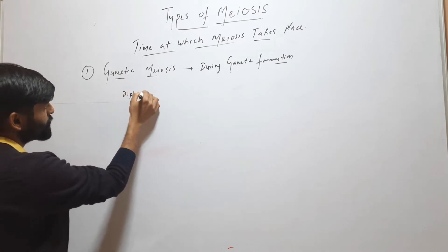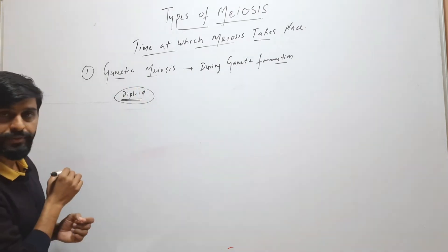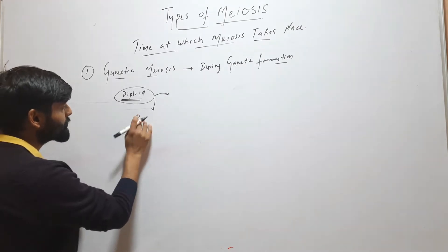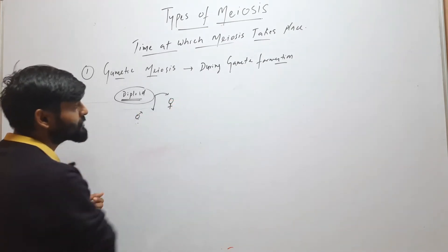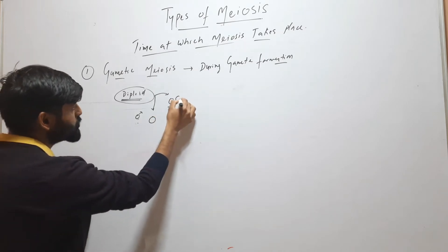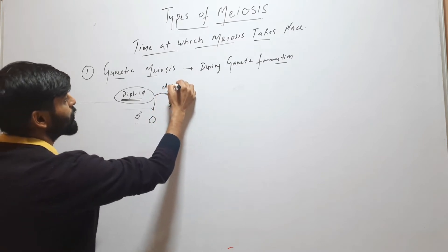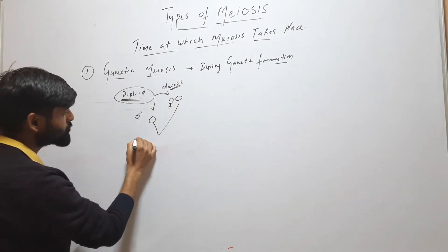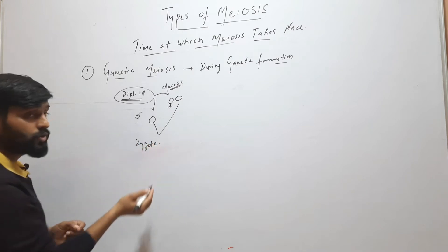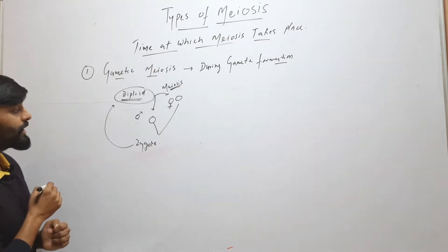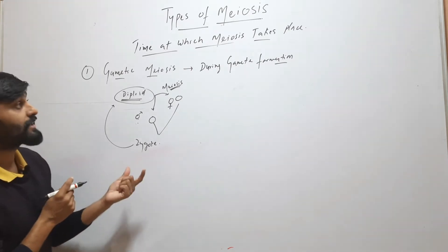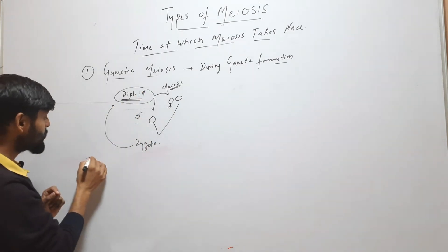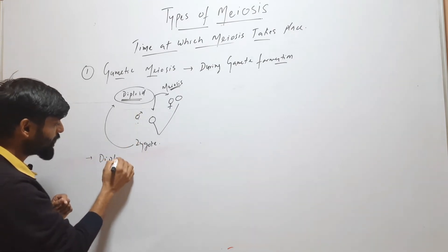Suppose it is a diploid organism. This diploid organism forms gametes — male gametes and female gametes. During this gamete formation, meiosis takes place. These gametes further fuse to form a zygote, and this zygote divides by mitosis to form a diploid organism. This type of life cycle in which gametic meiosis occurs is called a diplontic life cycle.